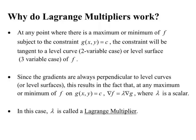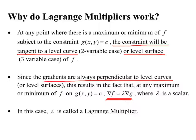So the gradient of f will equal some scalar times the gradient of g, and the scalar — we use a lambda — is called a Lagrange multiplier. So the highlights are: the constraint is tangent to the level curve or level surface whenever there's a maximum or minimum, gradients are always perpendicular to level curves or level surfaces, and so gradient of f equals lambda times gradient of g.